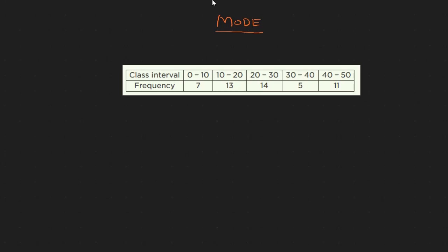Now let's see here. The maximum frequency is 14, which is the largest frequency. The frequency corresponding to the class interval with the maximum frequency — we call it the modal class. The modal class is 20 to 30.